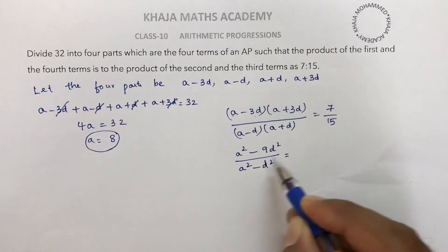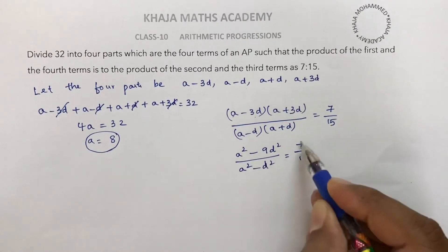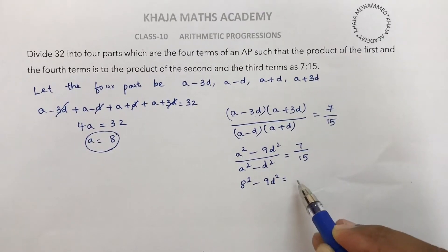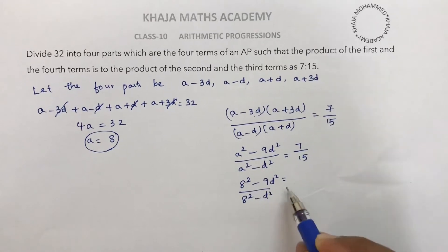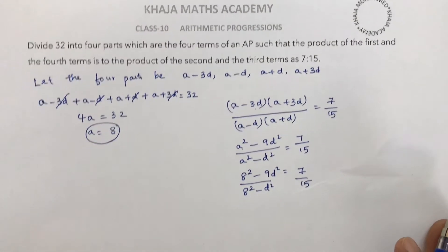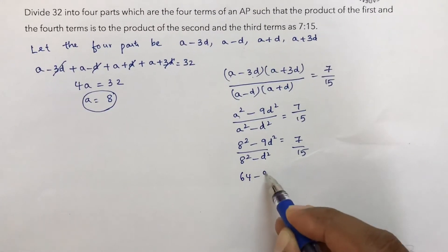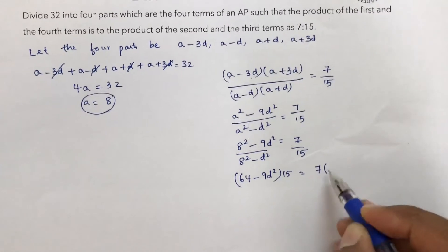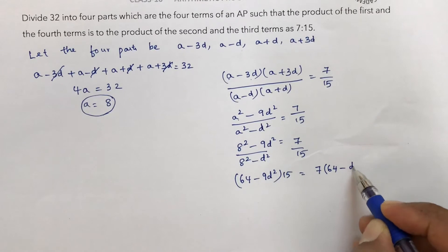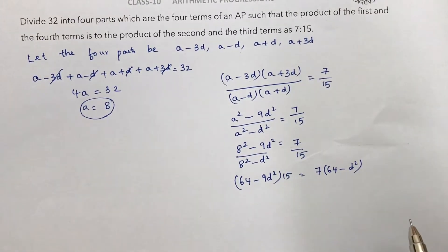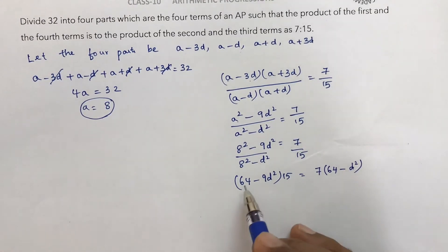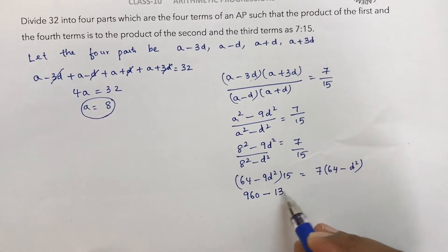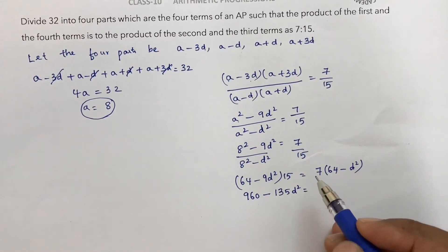Since a = 8, we have a² = 64. So the equation becomes (64 − 9d²) / (64 − d²) = 7/15. Cross-multiplying: 15 times (64 − 9d²) = 7 times (64 − d²), which gives 960 − 135d² = 448 − 7d².